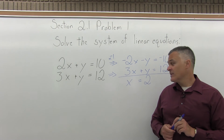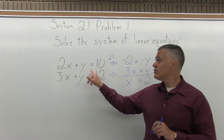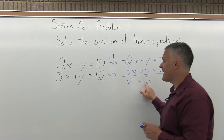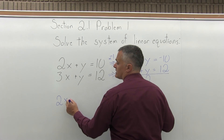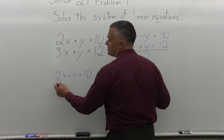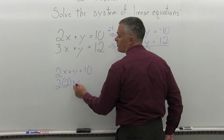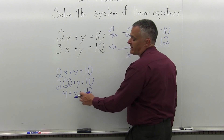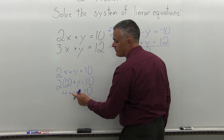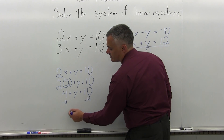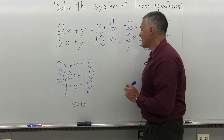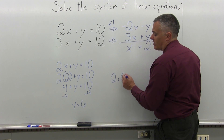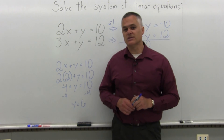Step 4, the final step: take the answer from Step 3 and plug it back into either of the original equations and solve for the other variable. I'll choose the top equation. So with x equals 2, we have 2 times 2 plus y equals 10. 2 times 2 is 4, so 4 plus y equals 10. I can see that y must be 6, since 4 plus 6 makes 10. Subtract 4 from both sides and you get y equals 6. So x is 2 and y is 6 — these lines would intersect at the point (2, 6). That's the solution to the system of linear equations.